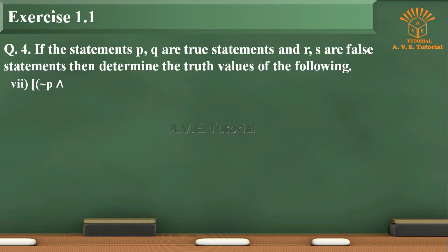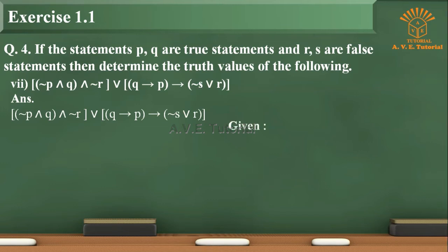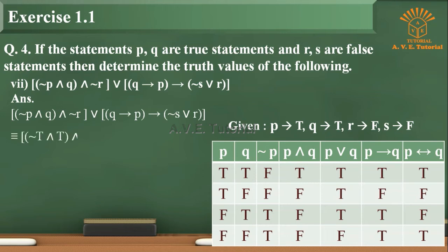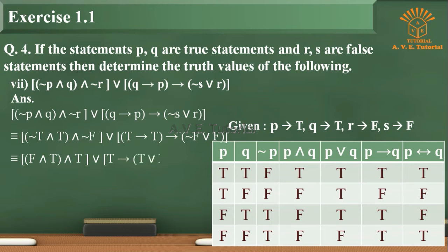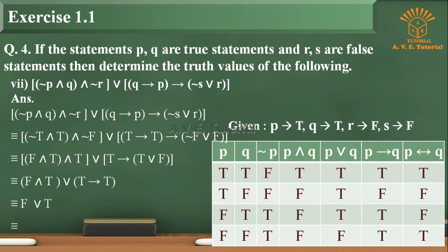Sub-question 7: (negation of P and Q) and R or negation of R or (Q implies P) implies (negation of S or R). Given P is true, Q is true, R is false, S is false. This is equivalent to (F and T) and T or T implies T implies (T or F), which is equivalent to F or T implies T, which is equivalent to T.